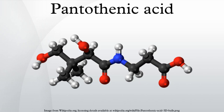Daily requirement: Pantothenate in the form of 4-phosphopantothenate is considered to be the more active form of the vitamin in the body. However, any derivative must be broken down to pantothenic acid before absorption. 10 mg of calcium pantothenate is equivalent to 9.2 mg of pantothenic acid. United Kingdom RDA: 6 mg/day.